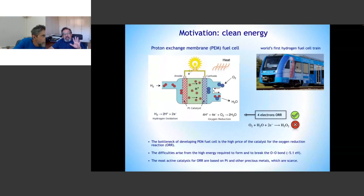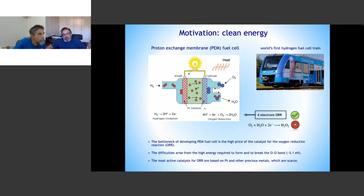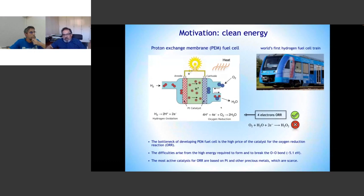The ideal catalyst must break the oxygen molecule and resist corrosive attack. Platinum is today's best commercial catalyst, but the problem is that it is very expensive and scarce. It's not possible to deploy these devices at massive scale because of dependence on just a few countries — only two countries produce more than 70% of the world's platinum. This motivates the search for new catalysts.